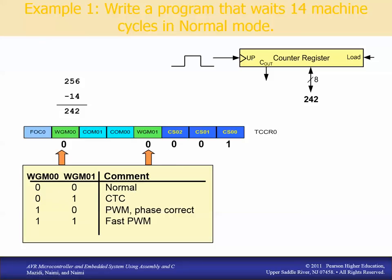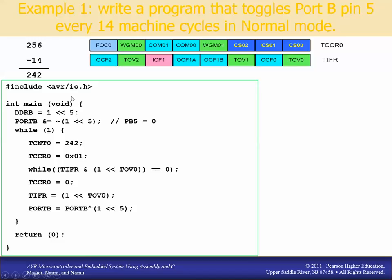Here's the code: we include IO.H and toggle port B pin 5. We set the data direction register B with a 1 at bit 5 — that's one left-shifted 5 — to configure pin 5 as output. Then we set port B so that bit 5 is masked to zero, making that output pin low voltage.